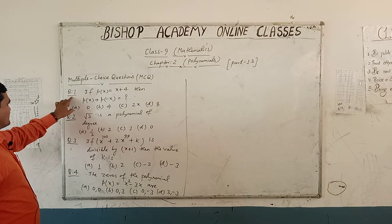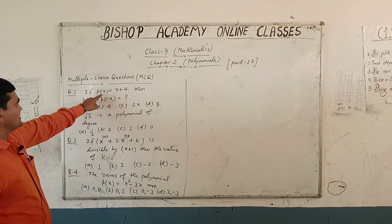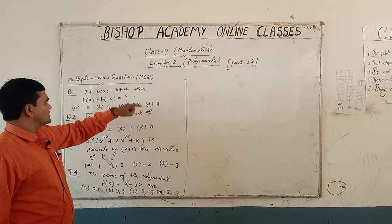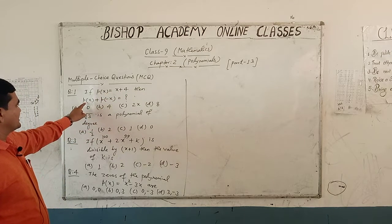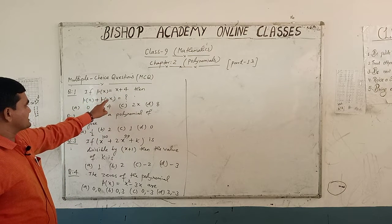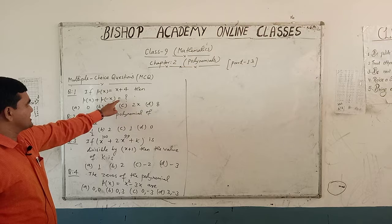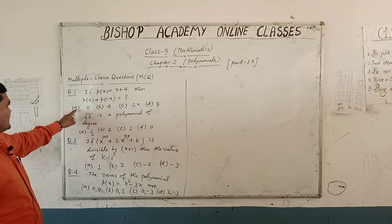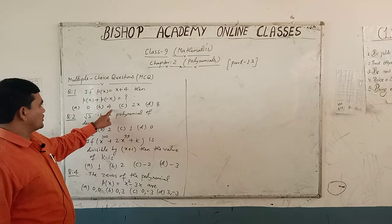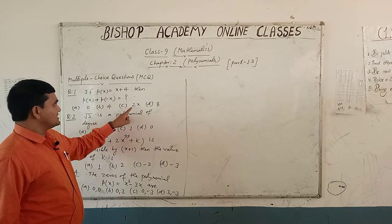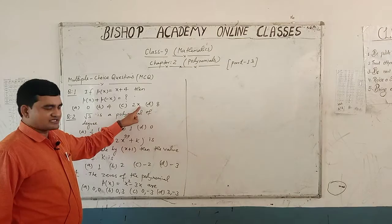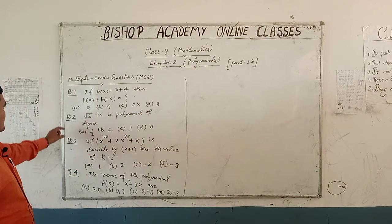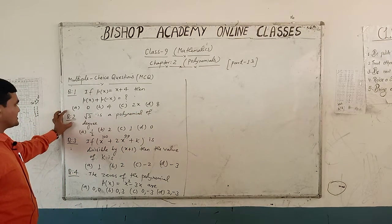Question number 1 is: if P(x) is equal to x plus 4, then P(x) plus P(-x) is equal to — option A is 0, option B is 4, option C is 2x, and option D is 8.